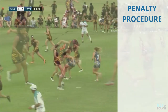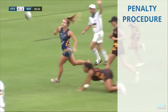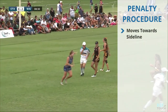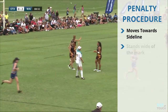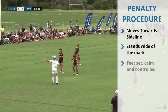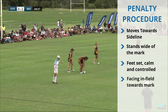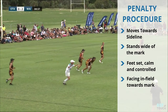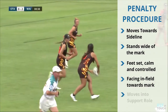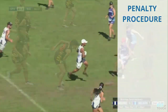Let's take another look at this and point out a few other important details. Notice how the referee is moving into position to complete the procedure near the sideline and wide of the mark. His feet are set while doing the signal to make sure it's done nice and clear. Also important to note that he is facing infield with eyes towards the ball, to make sure that the tap is performed properly. Lastly, he moves into the support role position as his buddy moves in to take over as control referee.